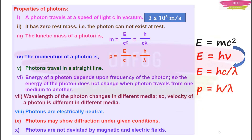The eighth property: photons are electrically neutral. That is why they will not bend or deviate in magnetic and electric fields. Also, photons may show diffraction and interference under given conditions. Under particular conditions, they will exhibit all the optical properties.